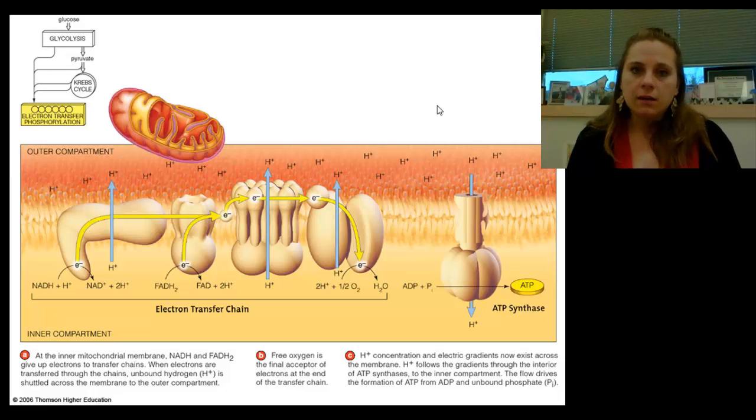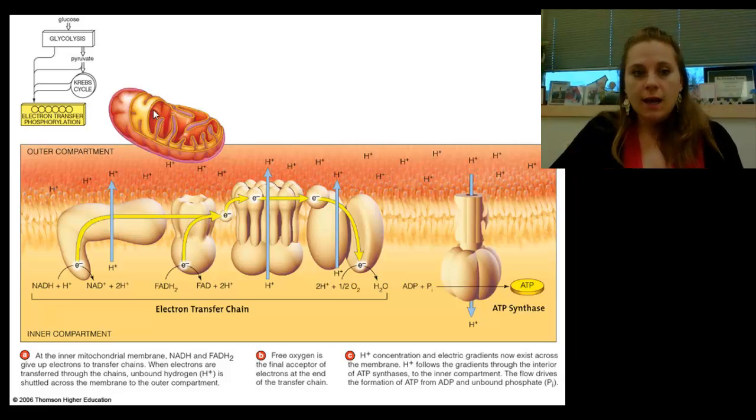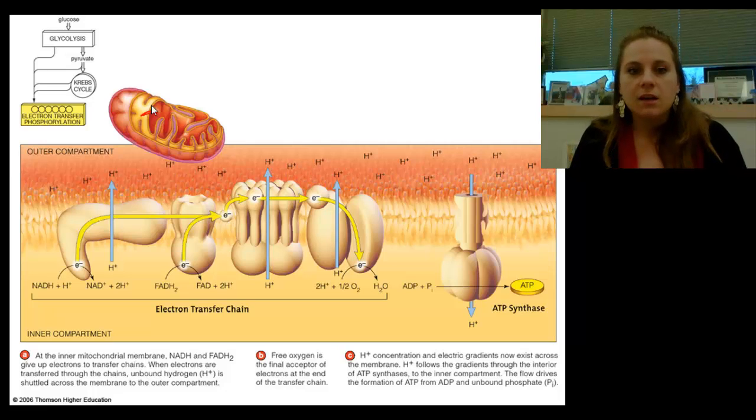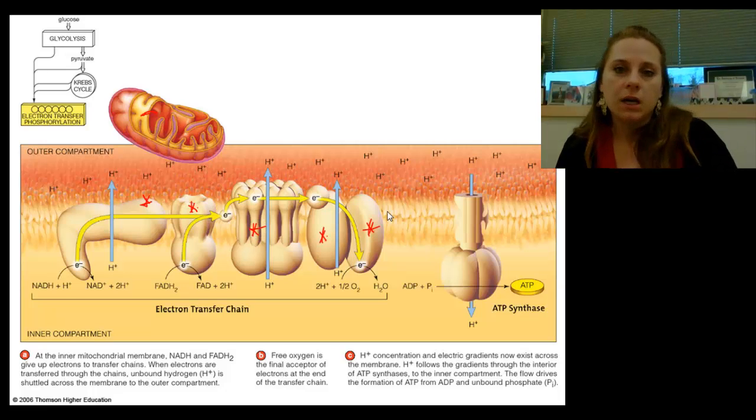Once we have created all of our cofactors, we're going to enter into the third and final piece of cell respiration, which is the electron transport system, and ultimately electron transport phosphorylation. This is going to happen in the folds, in the membranes of the mitochondria. That's why there's all these folds going on on the inside. The more surface area of membrane we have, the more available proteins we have for this process. So these buggers here are just shoved throughout the membrane of the mitochondria.